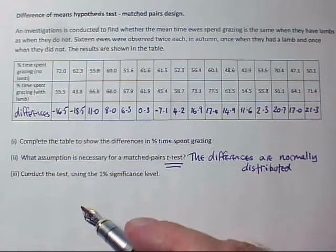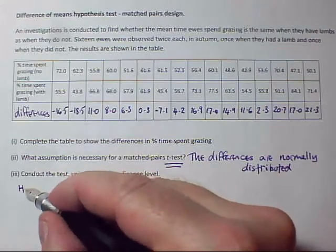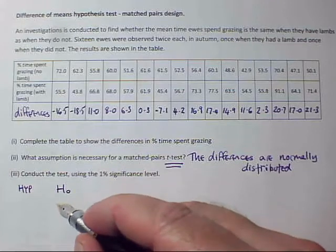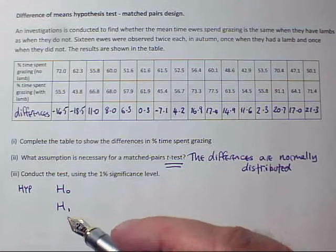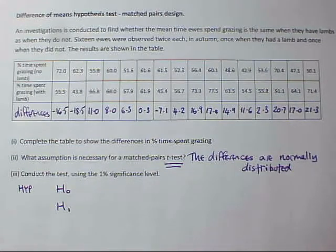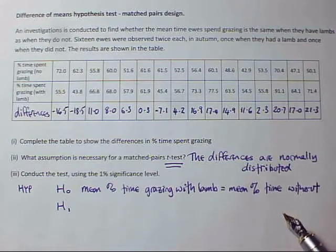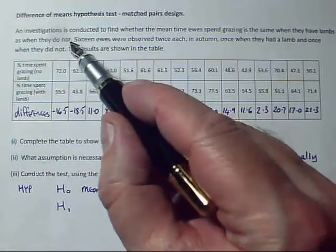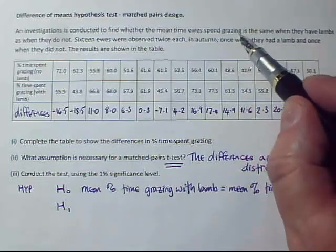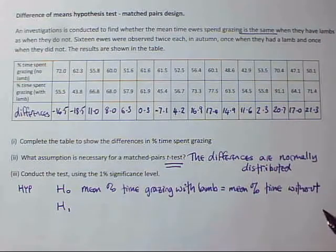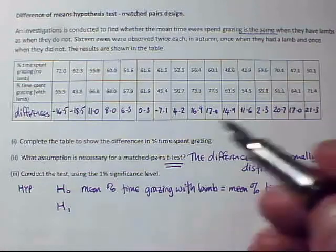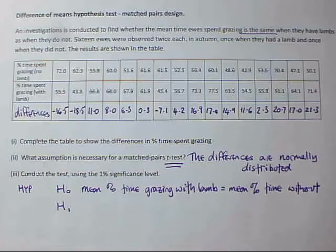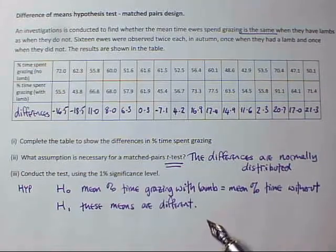Now I'll conduct the test — all five stages. Step one is the hypotheses. For all comparison of means questions, the null hypothesis H0 is that the two means are the same. For the alternative hypothesis H1, that depends on the investigation. The question asks whether the time they spend grazing is the same — it doesn't specify a direction — so the alternative hypothesis is simply that the means are different. This gives a two-tailed test.